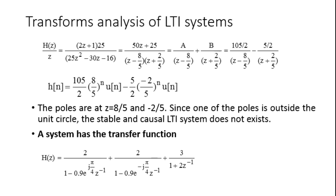Using the partial fraction method, we get A equals 5/2 and B equals 5/2. Substituting, H(z) equals (5/2) divided by (z minus 8/5) plus (5/2) divided by (z plus 2/5). Therefore h(n) equals 5/2 times (8/5) to the power n times u(n) minus 5/2 times (minus 2/5) to the power n times u(n). The poles are at z equals 8/5 and z equals minus 2/5. Since the pole at z equals 8/5 is outside the unit circle, a stable and causal LTI system does not exist.